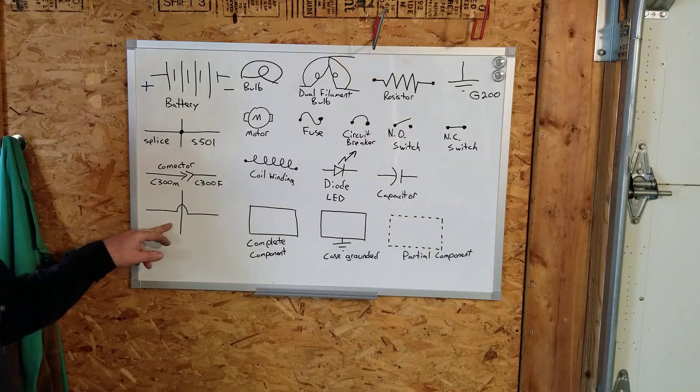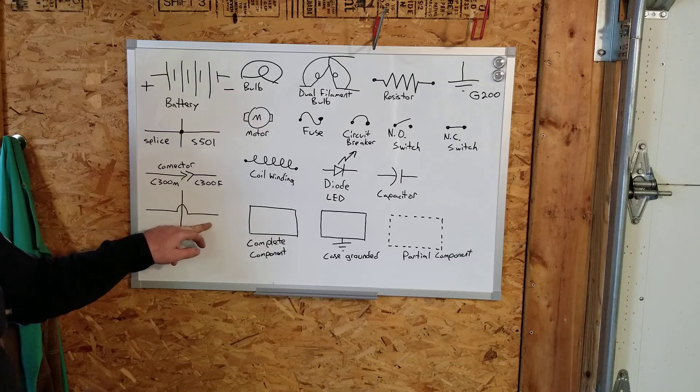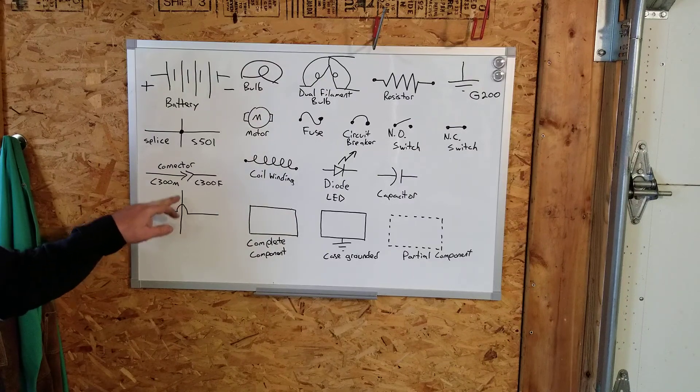This down here, in a wiring diagram, you see a wire comes along and it kind of hops over the other wire. Those two are not connected. Don't let it confuse you when you're tracing a diagram. This is a wire not connected to the crossing wire.